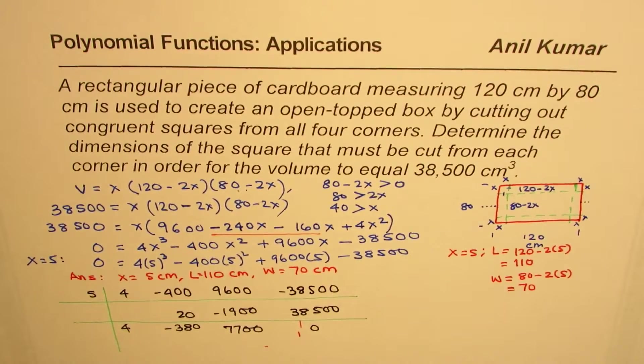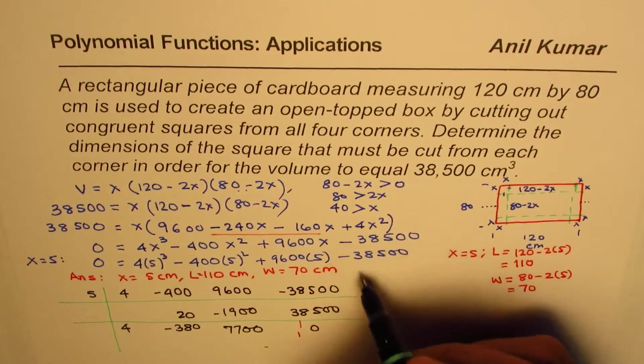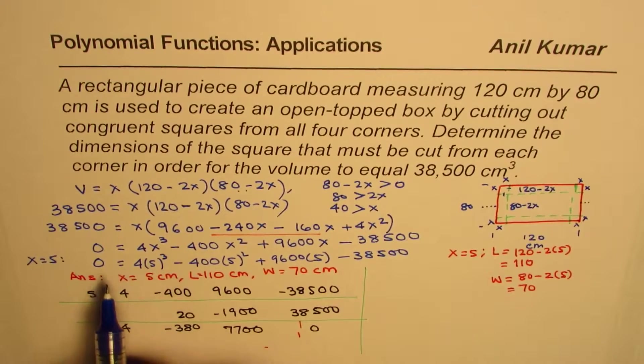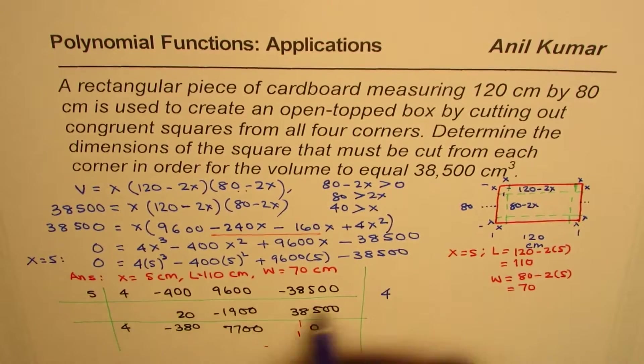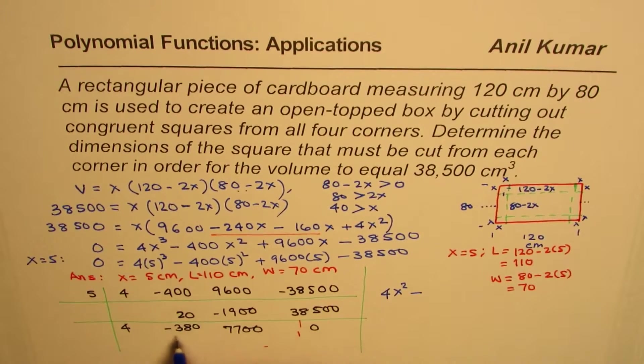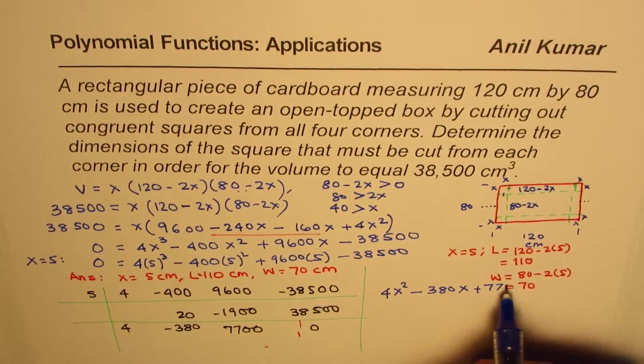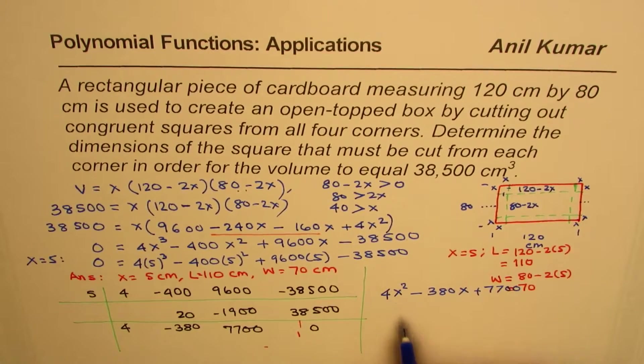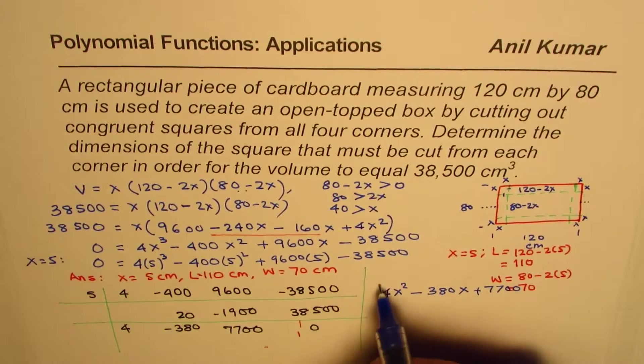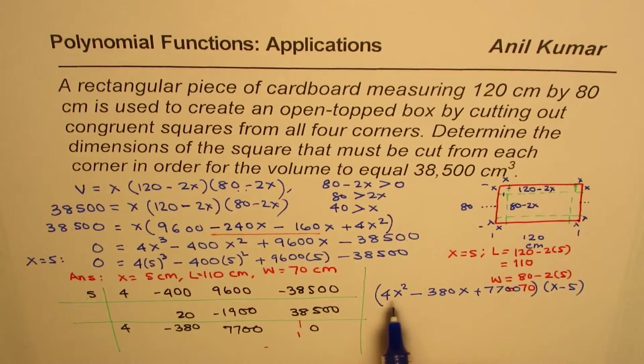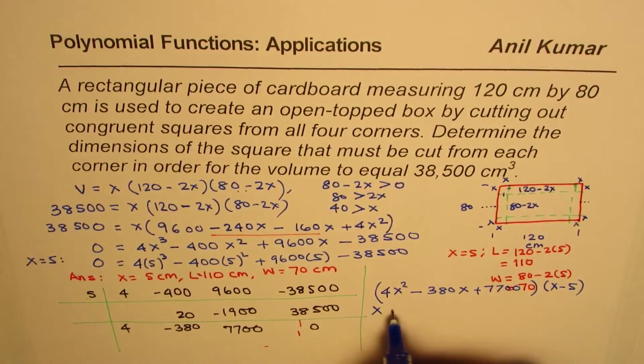So the quadratic equation is with the coefficients 4 for X squared. So let me write down this equation now as 4 times (X squared minus 380X plus 7,700). So that is the equation, the quadratic equation, and we can find further roots from here. So we have this equation times X minus 5. Now to find the value, we can use quadratic formula.